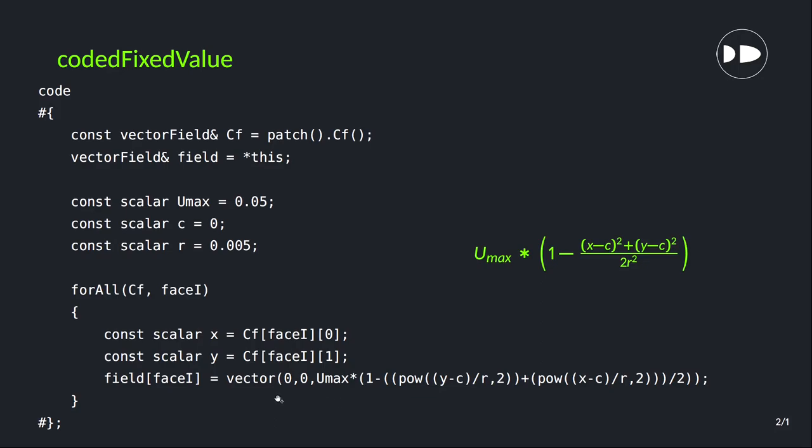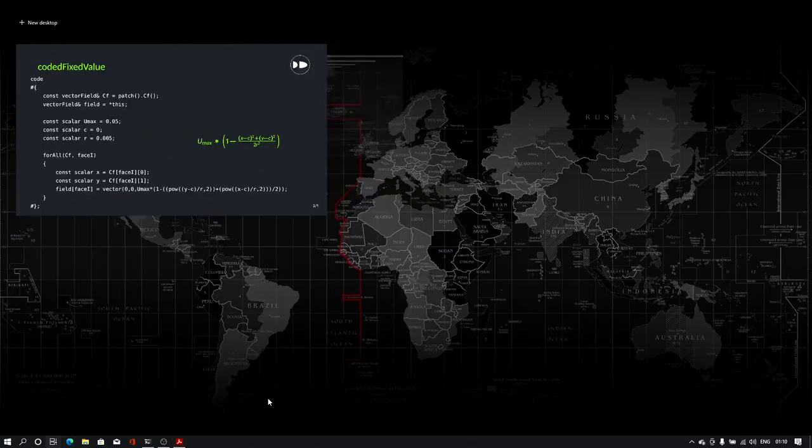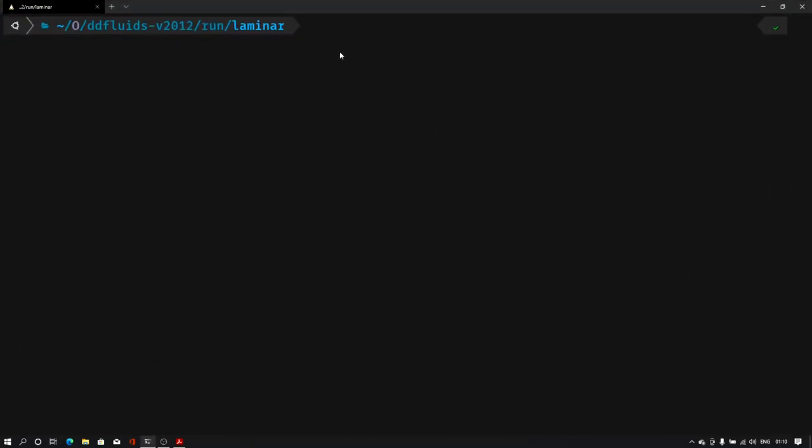So let me open my case file and I can show you how I give this particular function. I have already defined everything so in this laminar case I will open the 0 folder and then the velocity field.